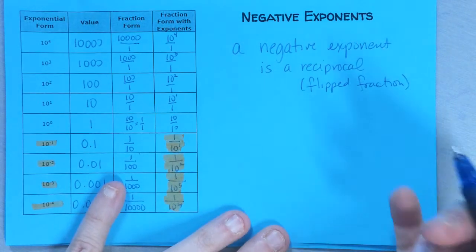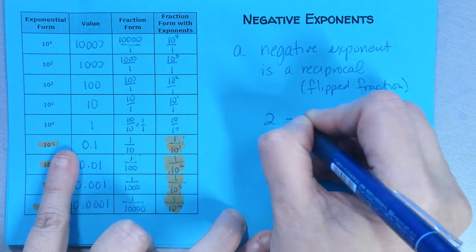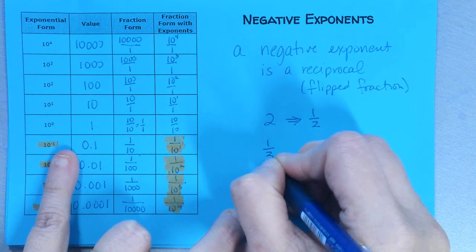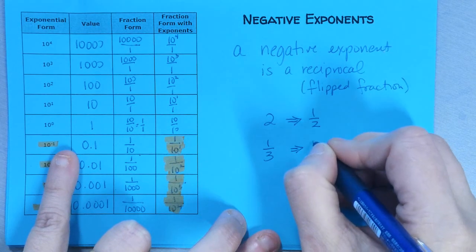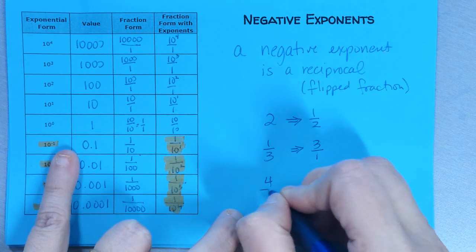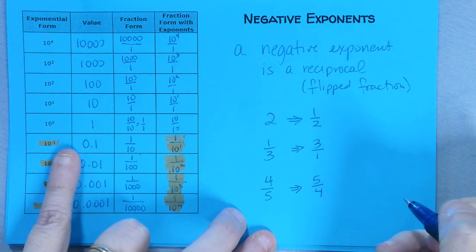If I were to write this, I could say 2, its reciprocal is 1 half. And 1 third, its reciprocal is 3 over 1. And 4 fifths, its reciprocal is 5 over 4.